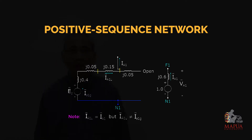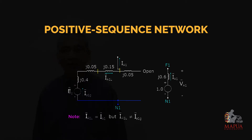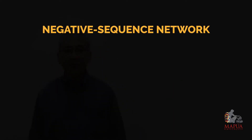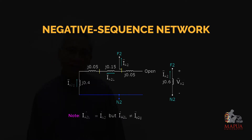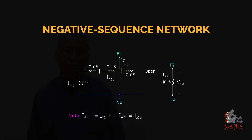Note that in the positive sequence network, the current IA in the transmission line is not equal to the generator current IA flowing through the generator, but it will be equal to the current flowing to the faulted point F1. For the negative sequence network, the connection pattern is similar to the positive sequence network but without the sources. We indicate the negative sequence reactances of all components and determine its Thevenin equivalent. The current flowing through the transmission line I2L is equal to the current flowing through the faulted point IA2, but not equal to the generator current I2G.